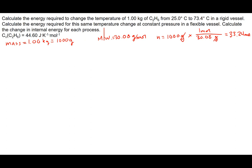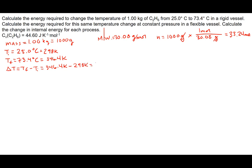We also have the temperatures. The initial temperature is 25.0 degrees Celsius, and if we convert that into Kelvin by adding 273, we get 298 Kelvin. The final temperature is 73.4 degrees Celsius, which gives us 346.4 Kelvin. So the temperature change is simply the final minus the initial: 346.4 Kelvin minus 298 Kelvin, which comes out to 48.4 Kelvin. We're also given that CV equals 44.60 joules per Kelvin per mole.